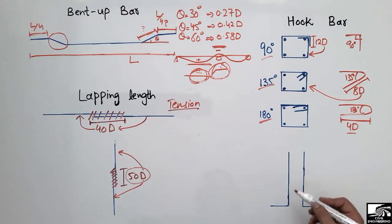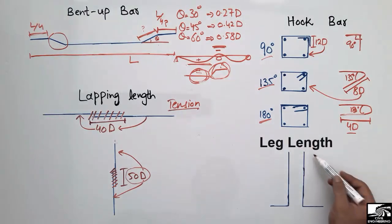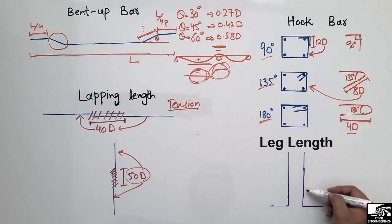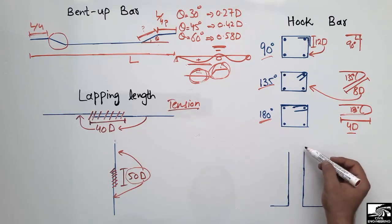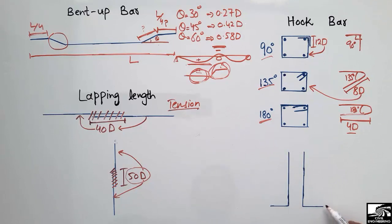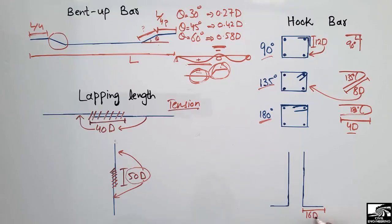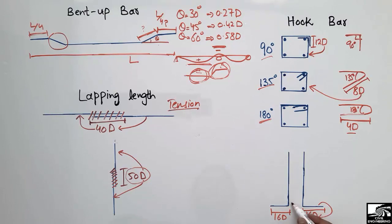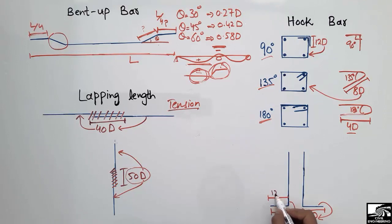The last topic is the length of the leg, which applies to the column-footing connection. The reinforcement of the column is extended into the footing so that the load is easily transferred from the column to the footing. This bent extension is called the leg of the reinforcement, and the leg length should be 16 times the diameter of the bar (16D). The minimum leg length should be 12 inches.